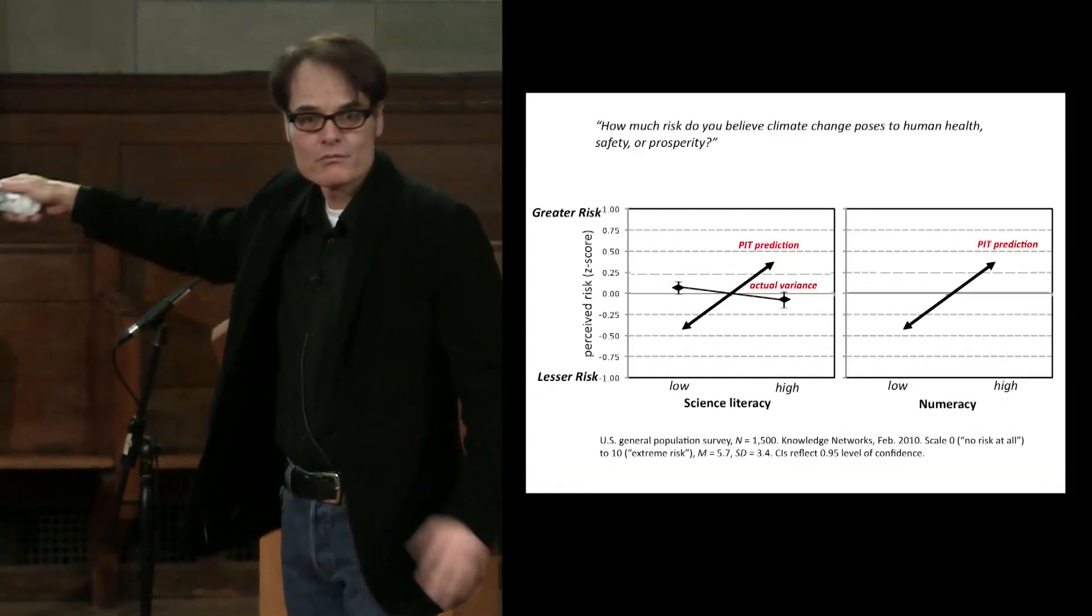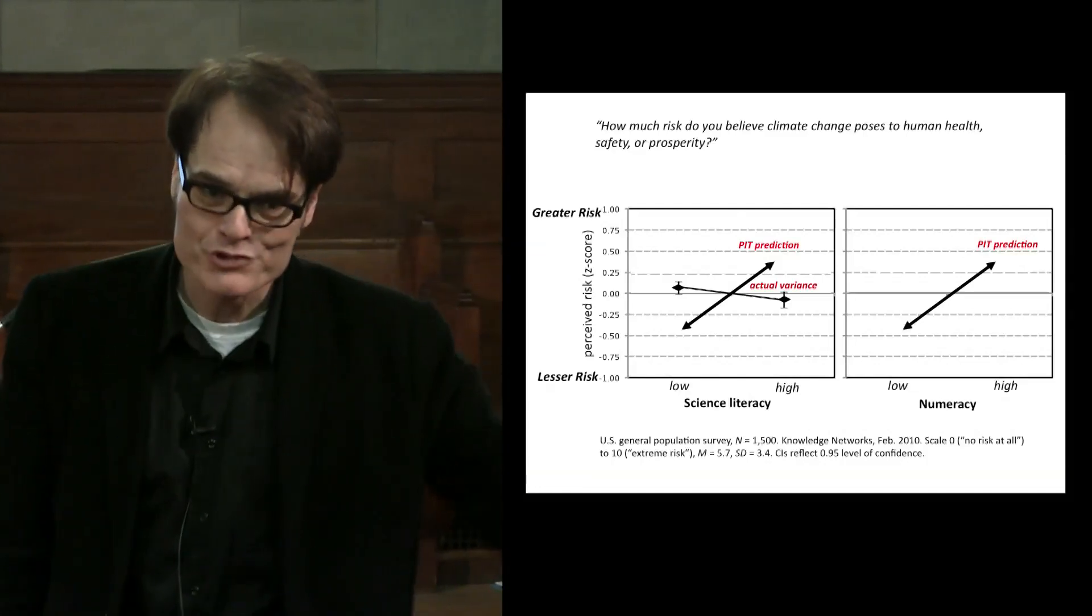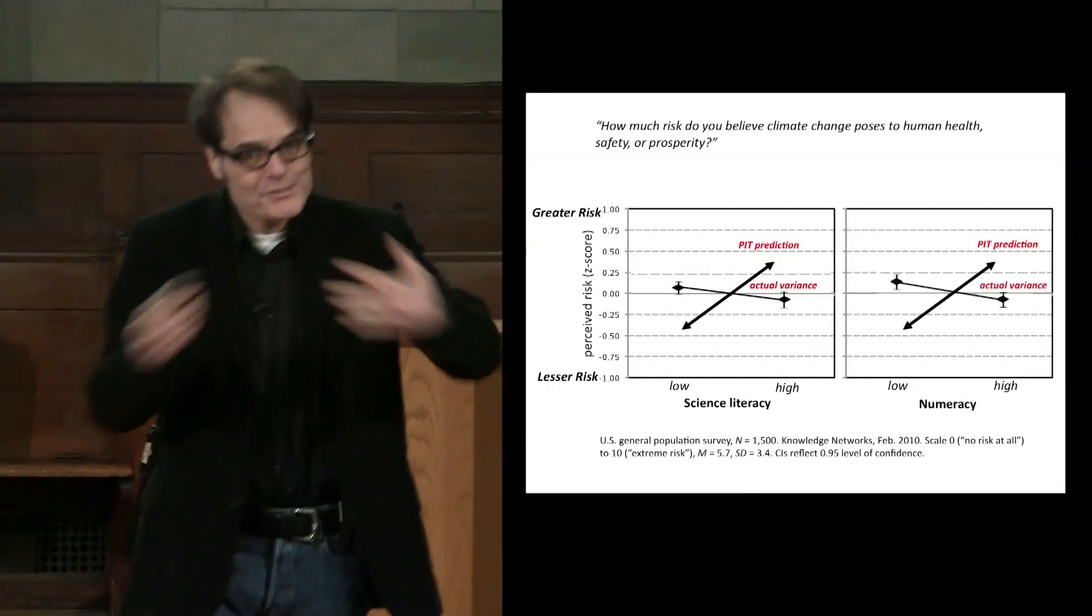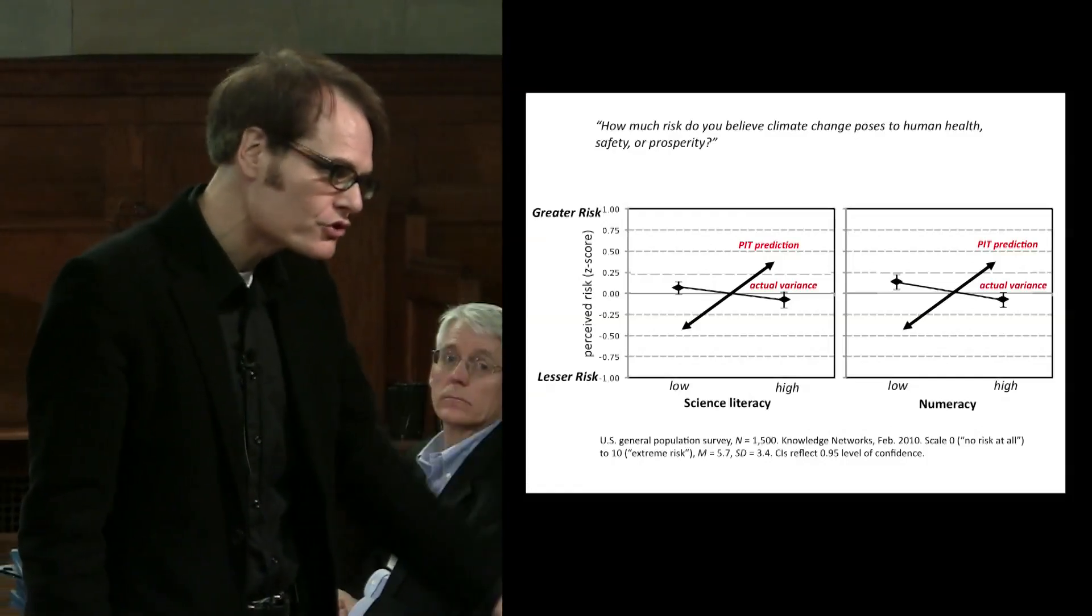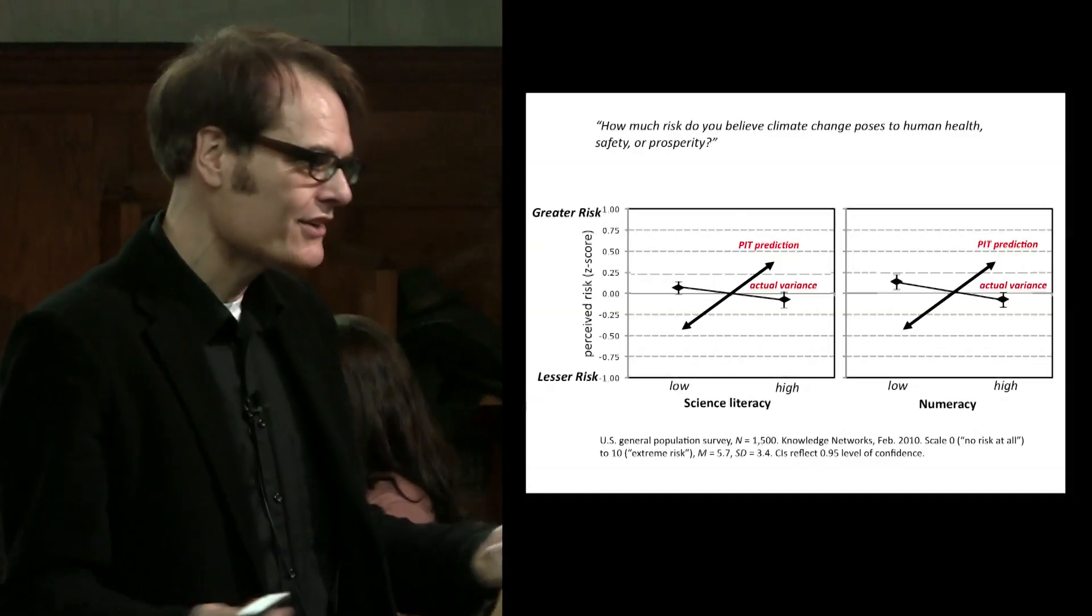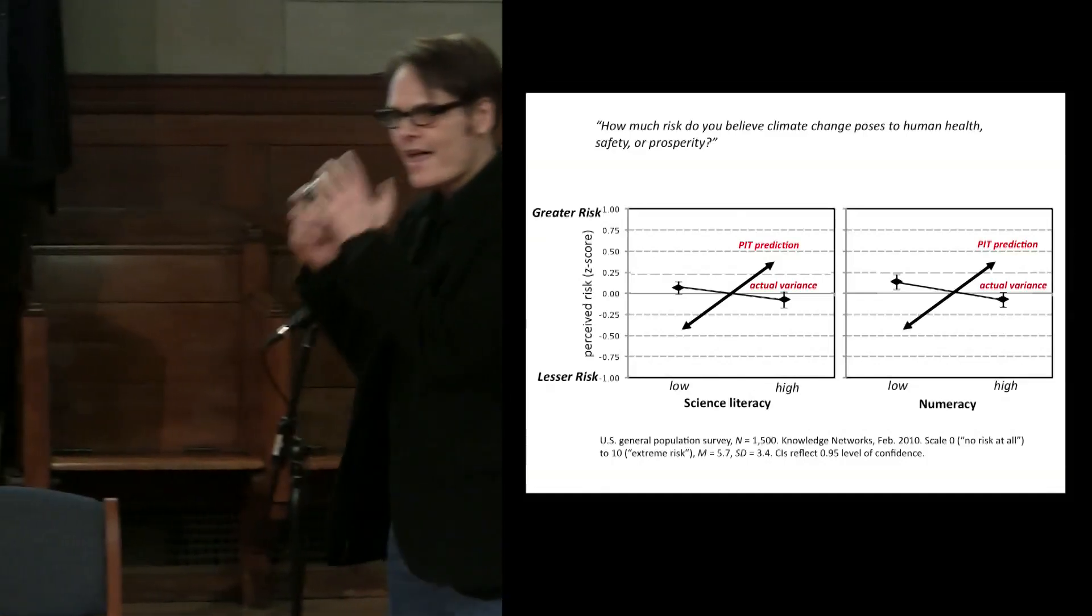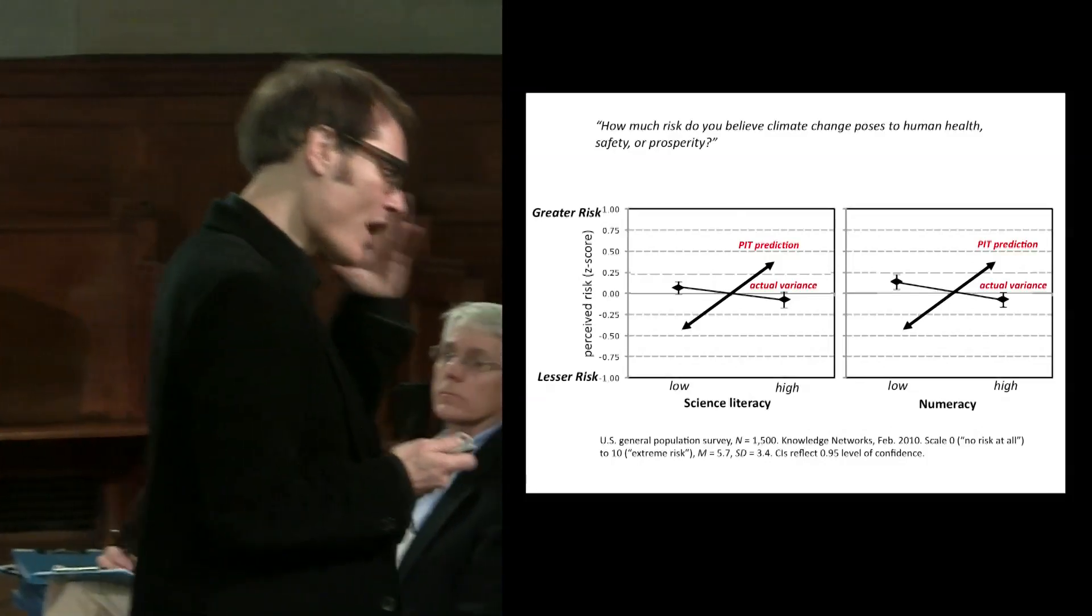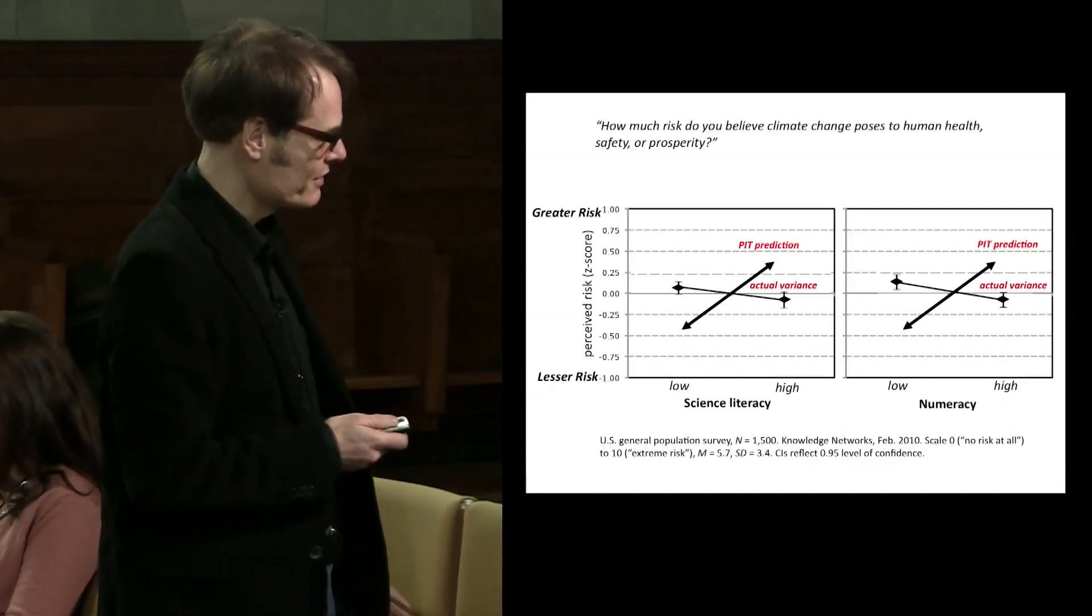Now that's science literacy. We also did numeracy - their ability to handle quantitative information, which is a good proxy of whether they're using the slow system two reasoning. So now see what happens with this. It's the same thing. As people become more numerate, better able to handle quantitative information, more disposed to use the slow, deliberate rather than the fast kind of reasoning, they don't become more concerned about climate change on the whole. And this is our work, but this is the consensus of people who look at the science of science communication. The knowledge deficit hypothesis is not the explanation. So what is?